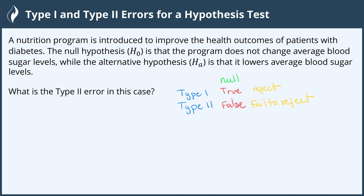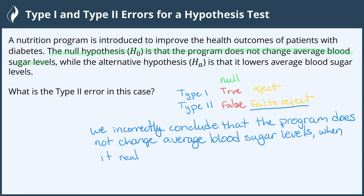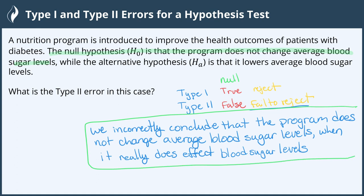We were given that the null hypothesis is that the program does not change average blood sugar levels. Because a type 2 error falsely fails to reject the null hypothesis, a type 2 error for this is that we incorrectly believe that the program does not change average blood sugar levels. We have now identified the type 2 error for this hypothesis test, and we're all done.